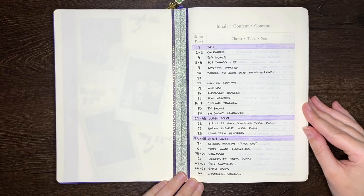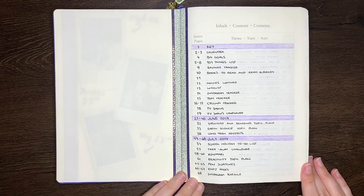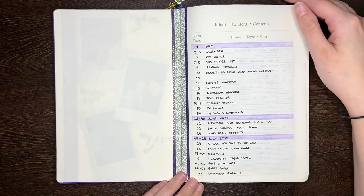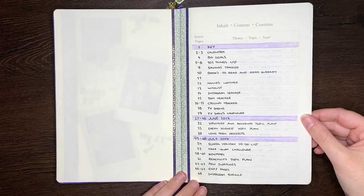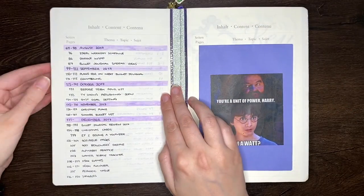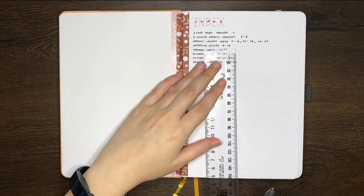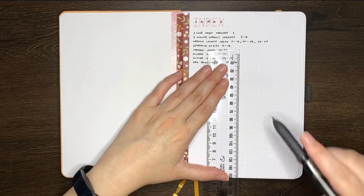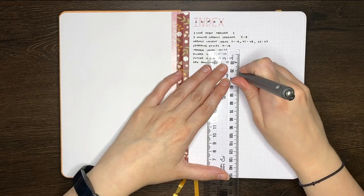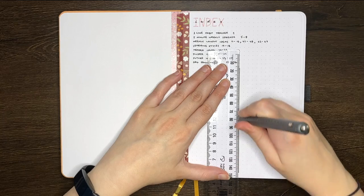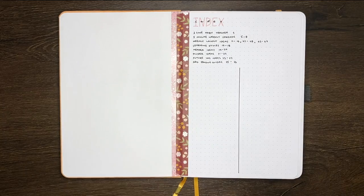If you're using the single column method for your index, especially if you're adding a lot of entries to your index, you may also find that your index starts to take up quite a few pages with a decent amount of wasted space. To make better use of the space available, you can divide your index pages into two columns, effectively doubling the number of entries that you can make in your bullet journal index.